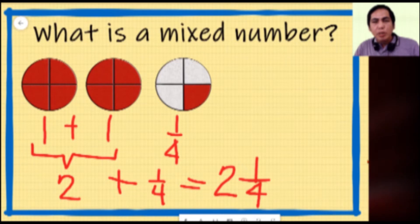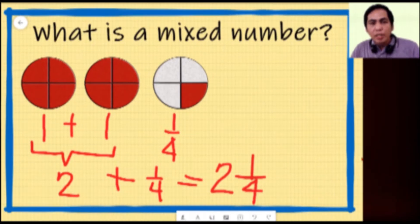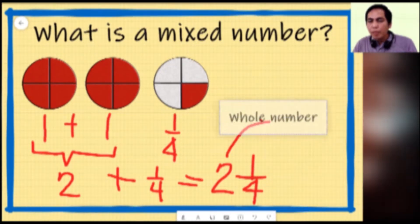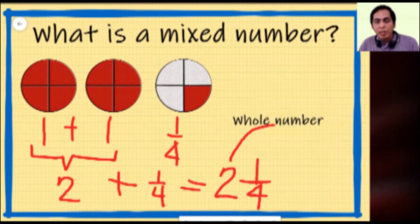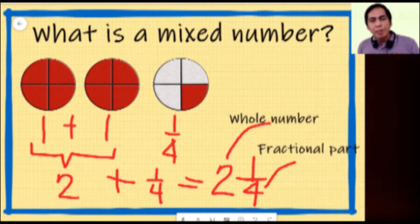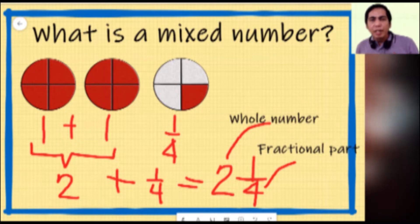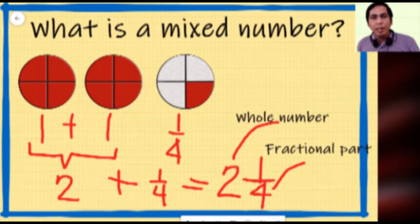So two and one fourth is an example of a mixed number. A mixed number comprises a whole number — in this case two — and a fractional part — in this case one fourth. In other words, a mixed number shows the result of adding a whole number and a fraction.